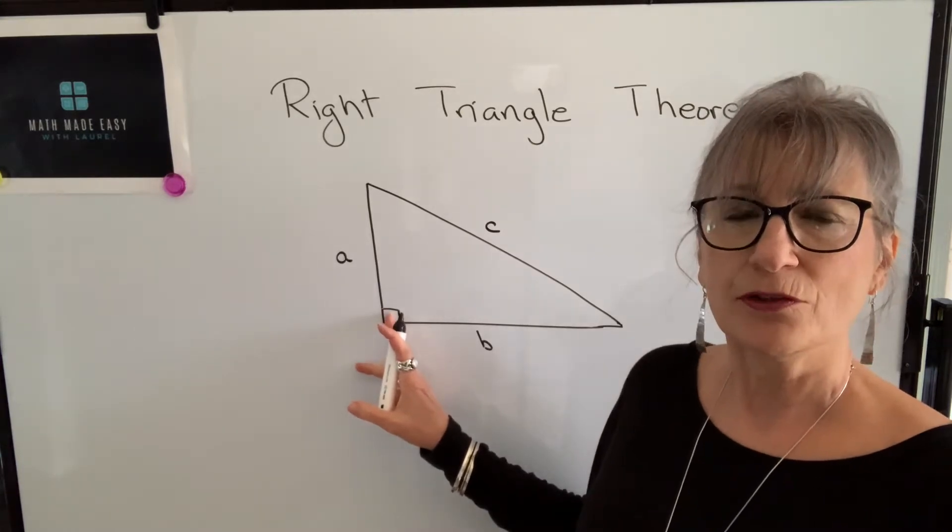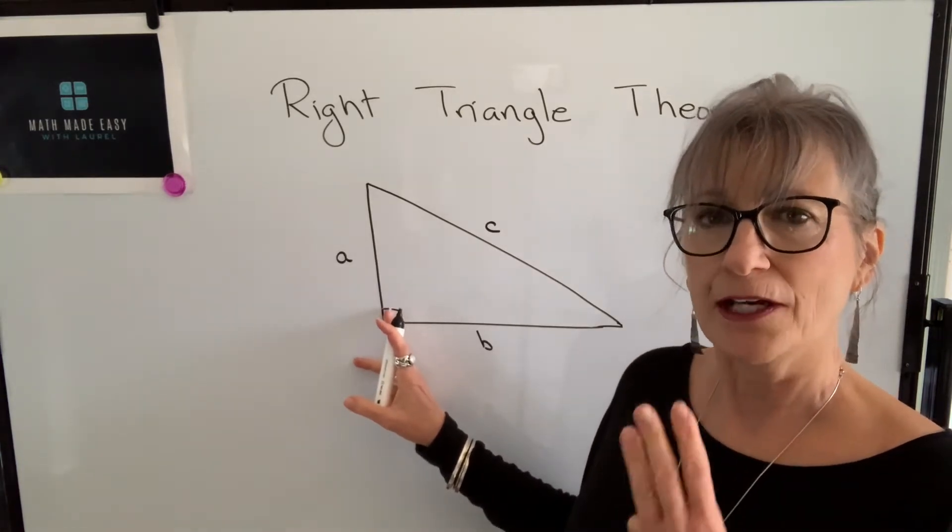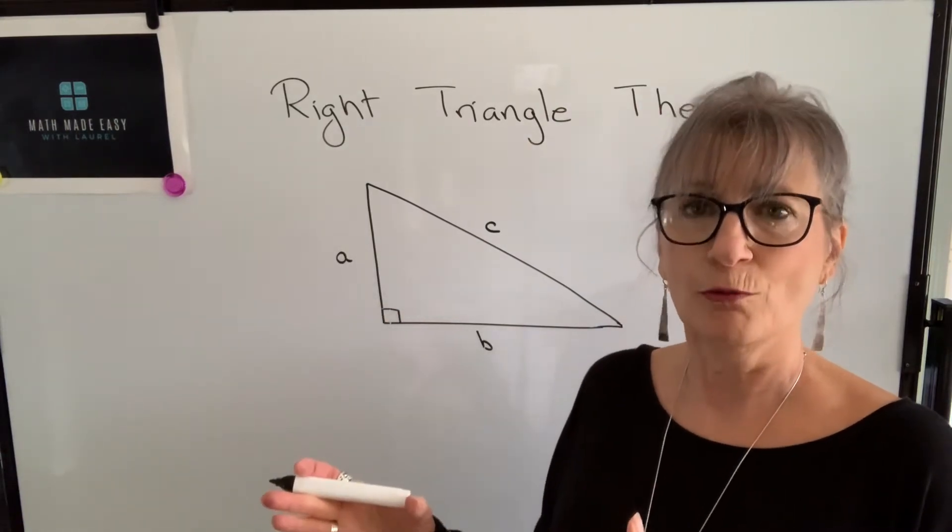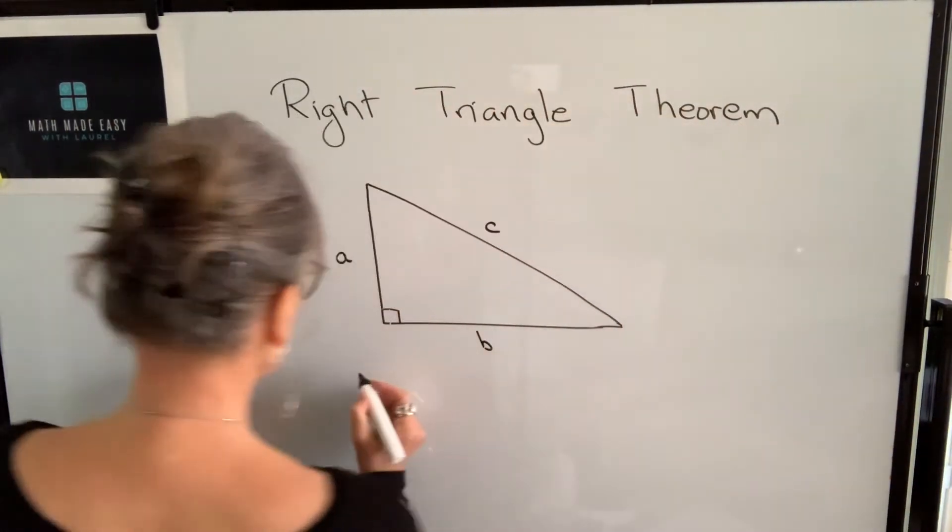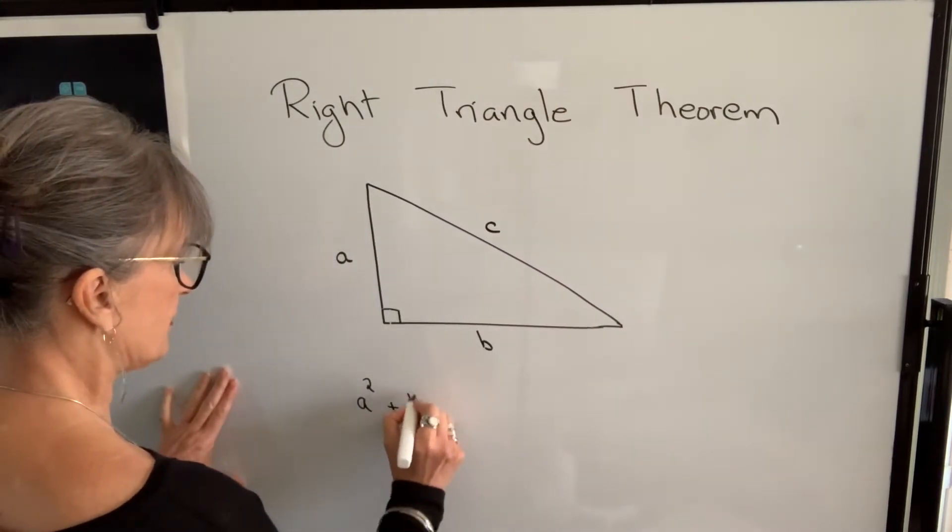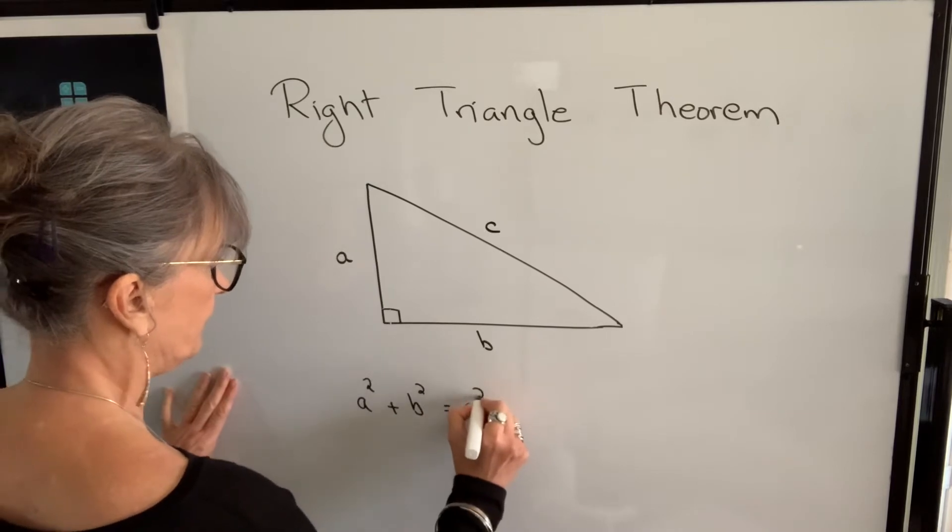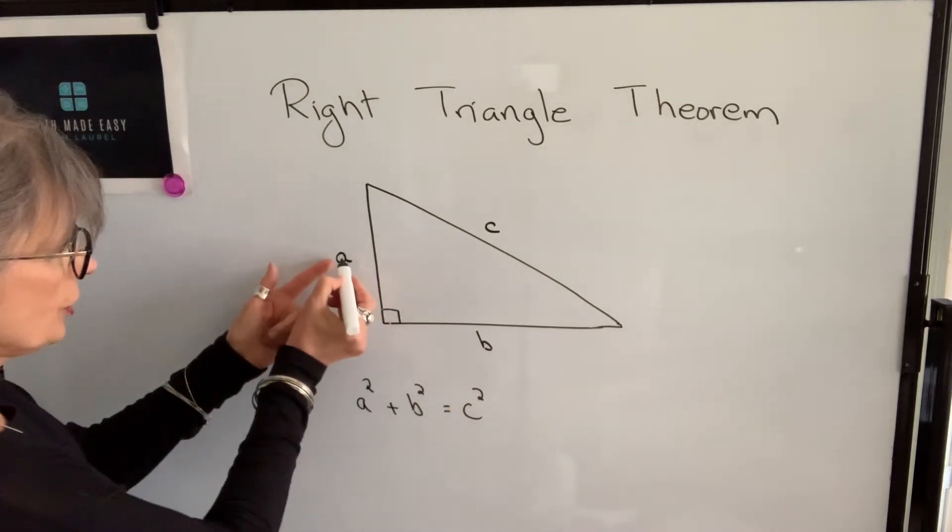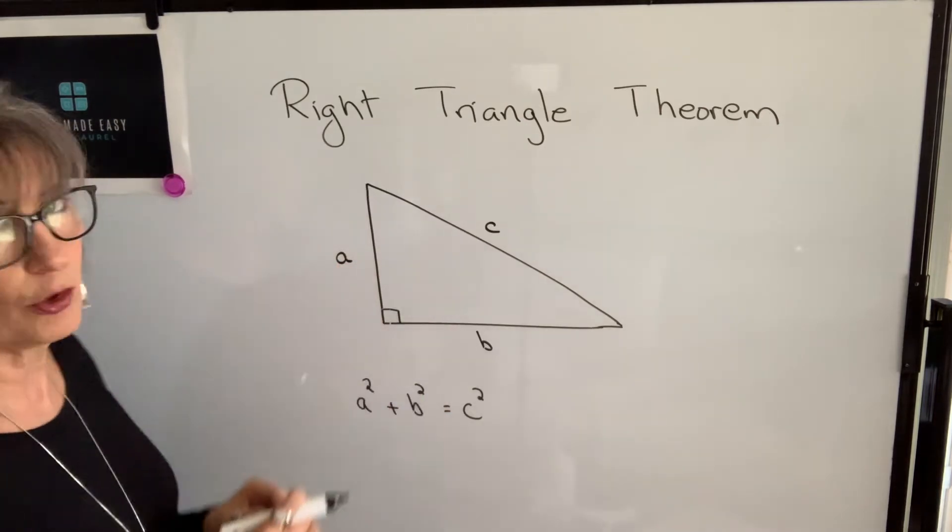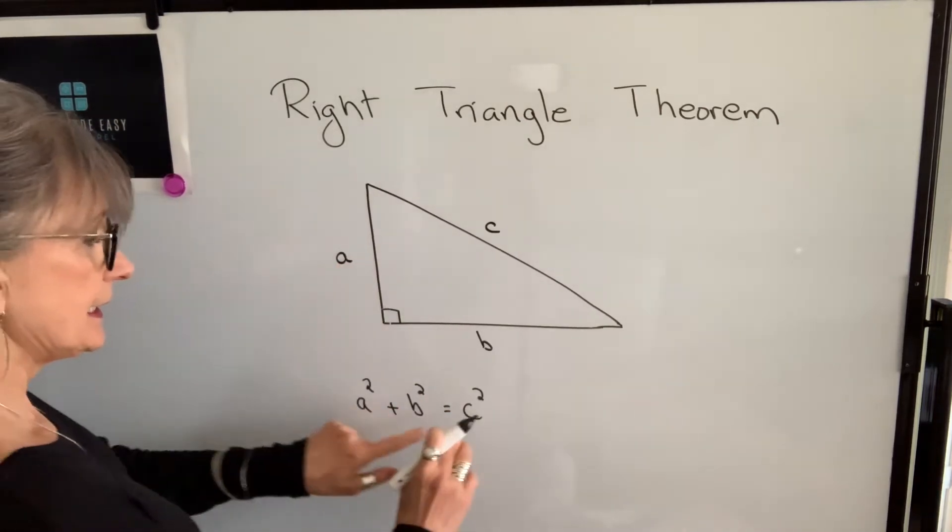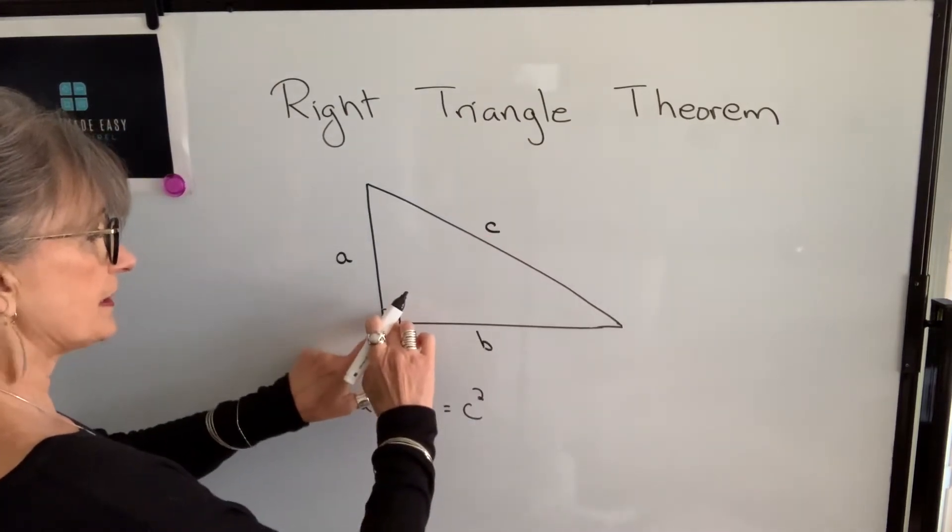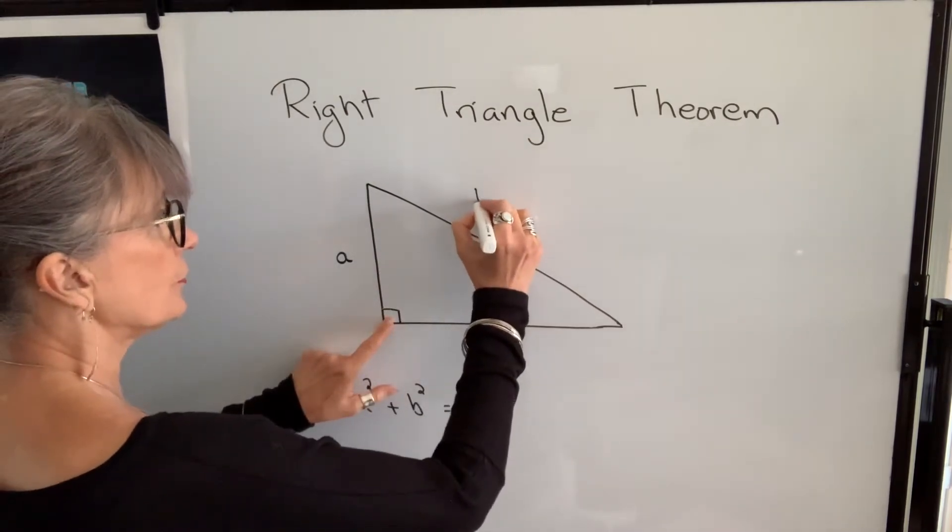The relationship between the three sides in a right triangle is always the same. But this relationship is only true for a right triangle. The relationship is a squared plus b squared will equal c squared. You can interchange a and b. It doesn't matter which side you call a and which side you call b. But side c is always the side opposite the right angle. It's also called the hypotenuse.